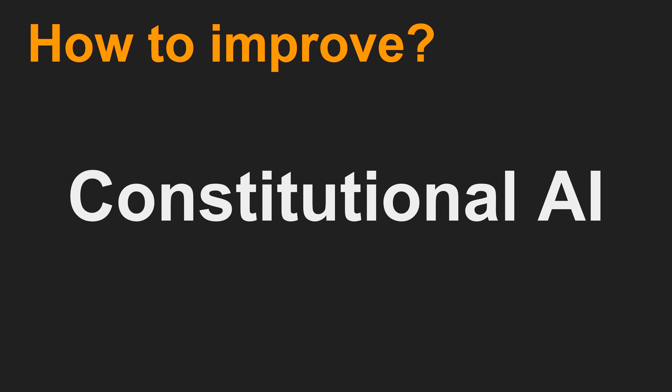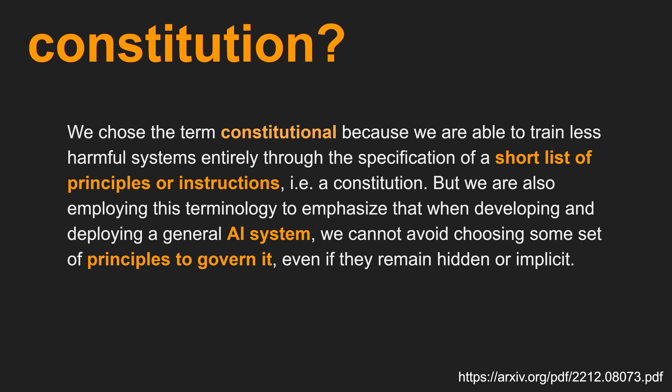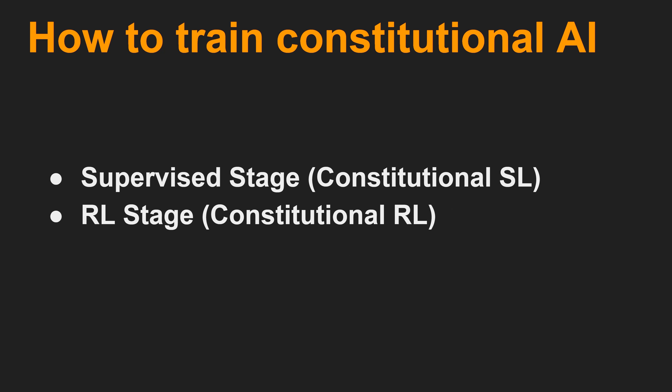Constitutional AI is the solution to resolve these problems from RLHF. The Constitution means the principle or instruction. While RLHF heavily depends on human feedback for its reinforcement learning, Constitutional AI enables AI feedback for its reinforcement learning based on a Constitution defined by humans, which is scalable and systemizable. Importantly, Constitutional AI is not a replacement of RLHF — rather, it is complementary to RLHF to improve harmlessness of the AI model.